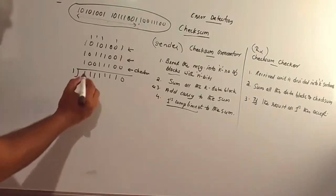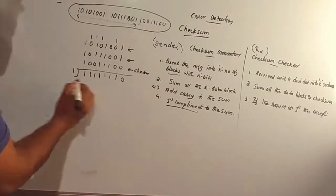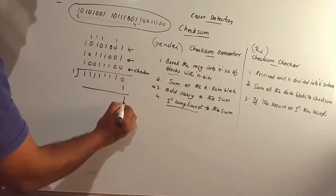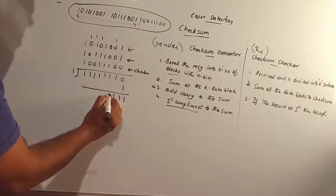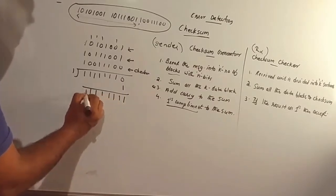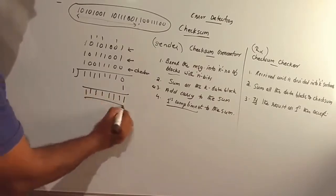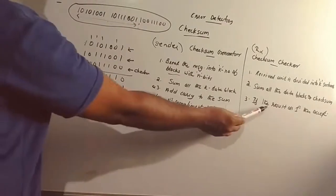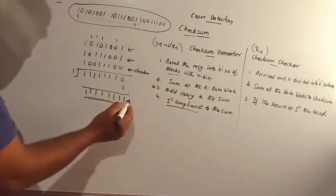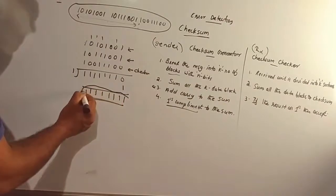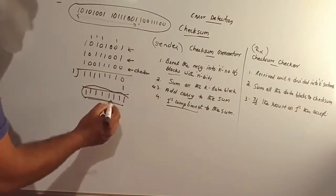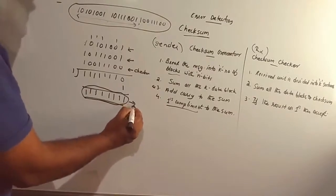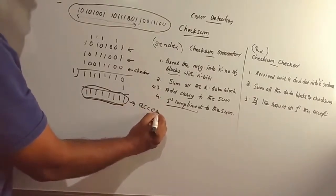We carry the carry bit and add it back. Our result should be all 1s: 1, 1, 1, 1, 1, 1, 1, 1. We get the result of all 1s. If the result is all ones, then accept the message. This is the final result — a single check confirms acceptance.